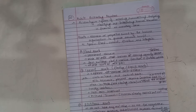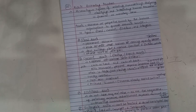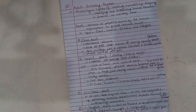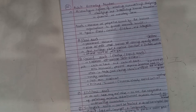Current assets, also called floating assets, include cash-in-hand, bills receivable, prepaid expenses — that is, expenses paid in advance — stock-in-trade also known as closing stock, short-term investments, and accrued income, which is income already earned but not yet received.